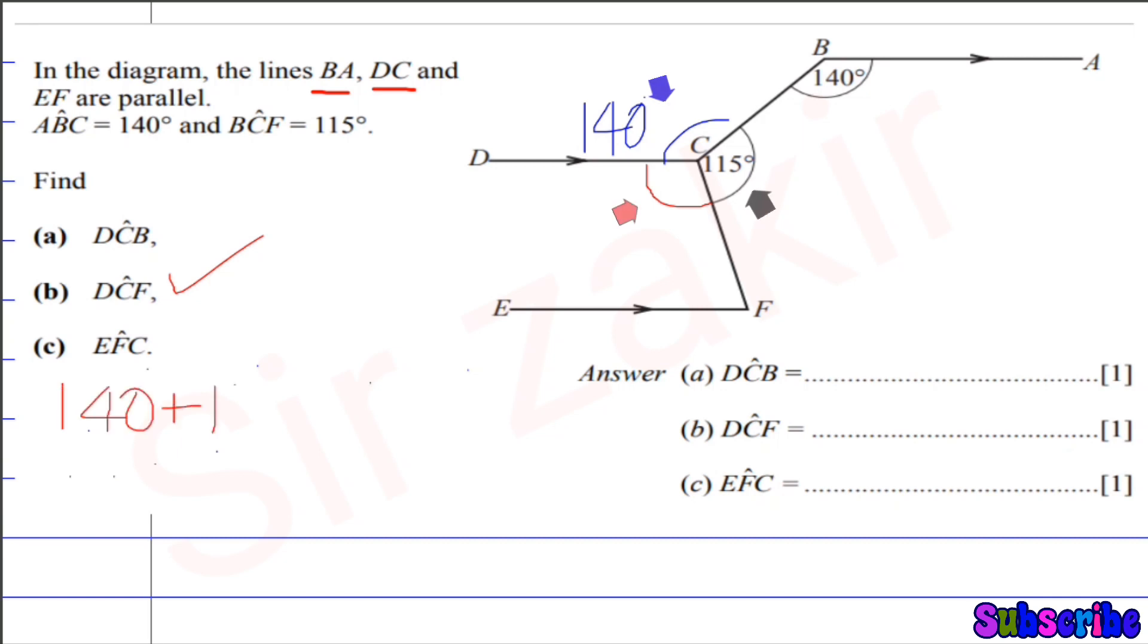The other is 115 degrees, the third one here is DCF. So we can see here red color circle. So angles here are DCF, 140, and 115. So sum of these angles is obviously 360.